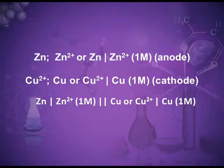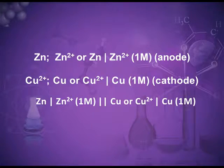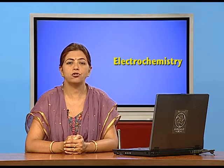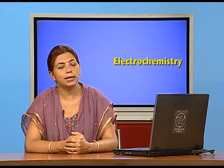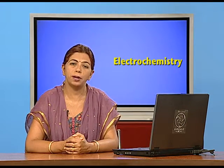While writing the cathode side, first we write the ionic state — the copper ion — then a vertical line, its concentration, and then the copper atom in the solid state. In between the two half cells you can see the parallel lines, which represent the salt bridge. I hope it is very clear how we can represent an electrochemical cell, and you must understand this to solve the numericals.